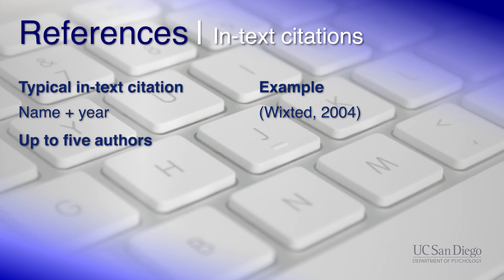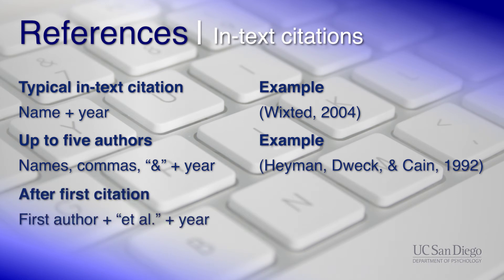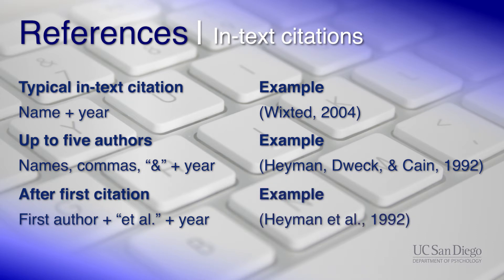For sources that have up to five authors, the first citation of that source should include all of their last names, separated by commas, and with an ampersand before the last author. If you cite that source again, you should only include the last name of the first author, followed by et al., and the year.